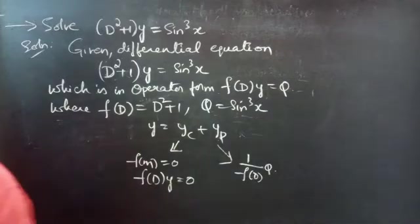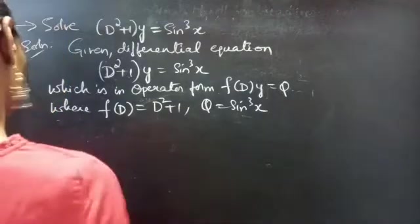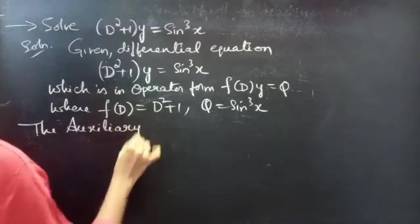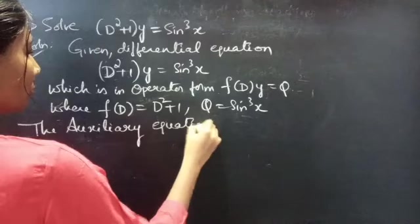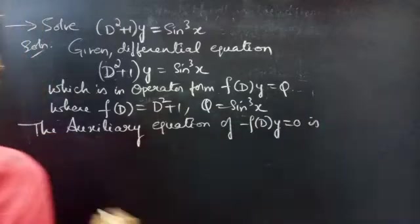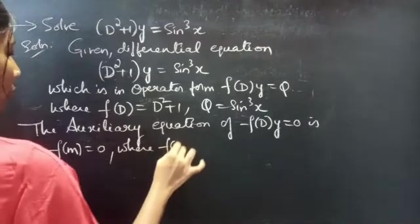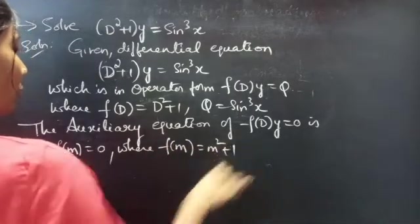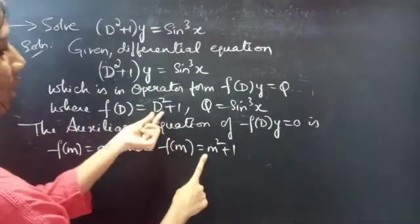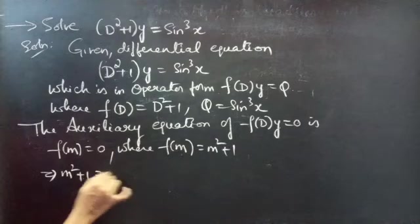So firstly, let us find the complementary function using the auxiliary equation. The auxiliary equation of f(D)·y = 0 is f(m) = 0, where f(m) = m² + 1. We have f(D) = D² + 1; just replace D by m to get f(m) = m² + 1. So our auxiliary equation becomes m² + 1 = 0.